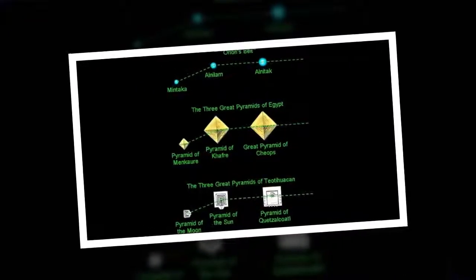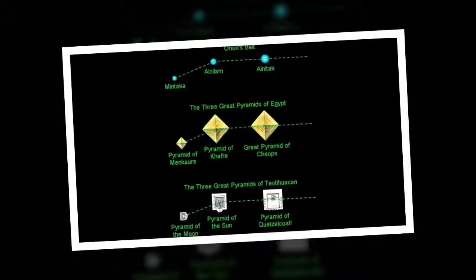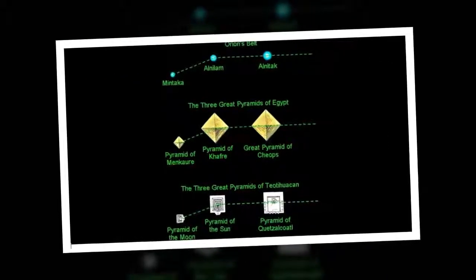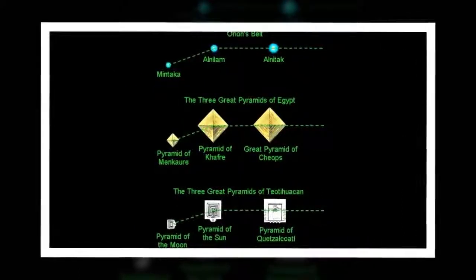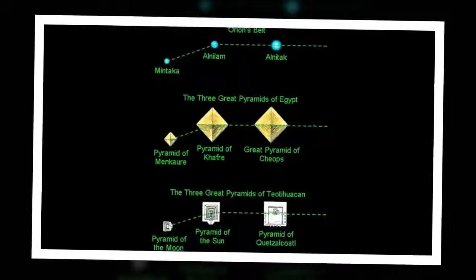The Pyramid of the Sun at Teotihuacan consists of five superimposed frustoconical bodies and a three-body structure. The Pyramid of the Sun is located on the eastern side of the Avenue of the Dead, practically aligned perpendicular to this road.